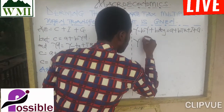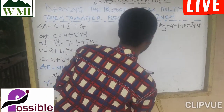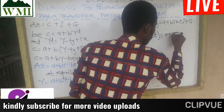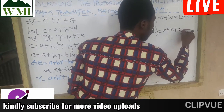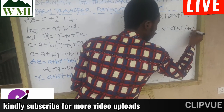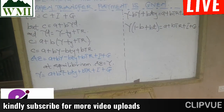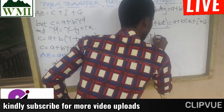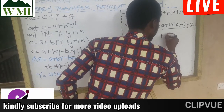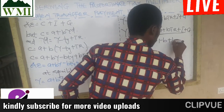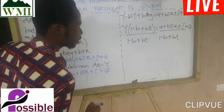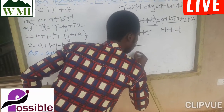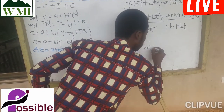Continuing the grouping of like terms, you get Y times (1 minus B plus BT) equal to A plus BTR plus I plus G. Now we divide both sides by (1 minus B plus BT), which cancels on the left side.